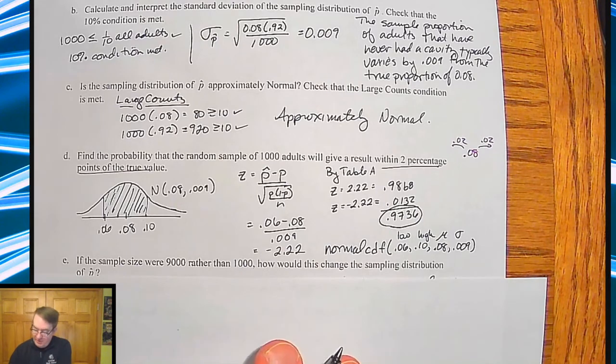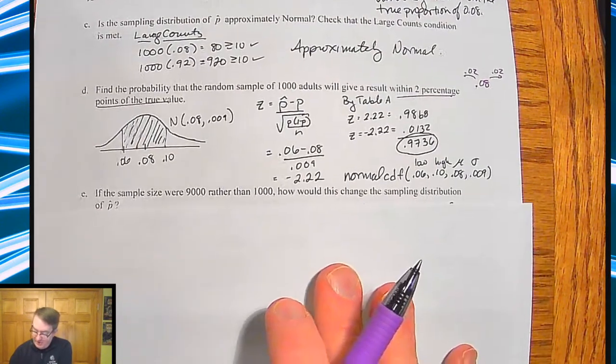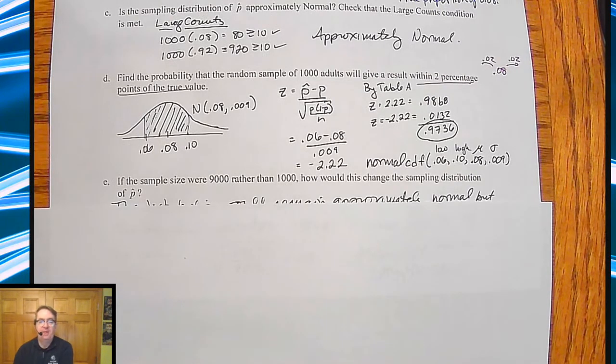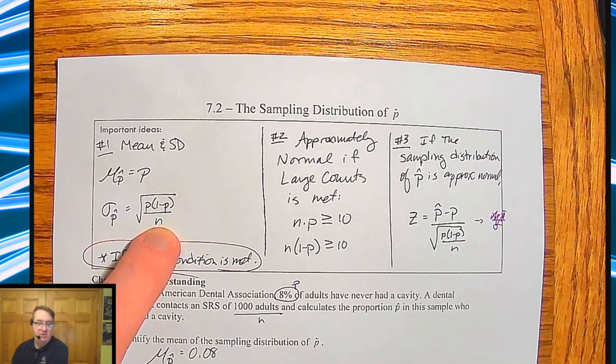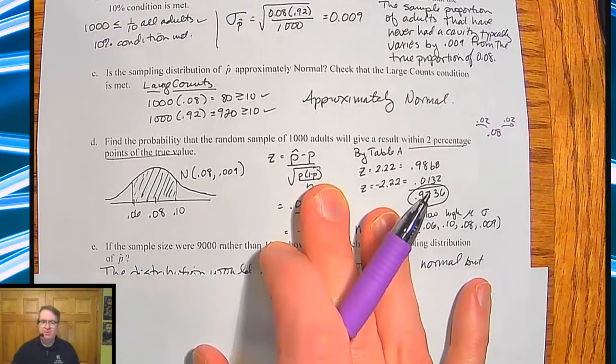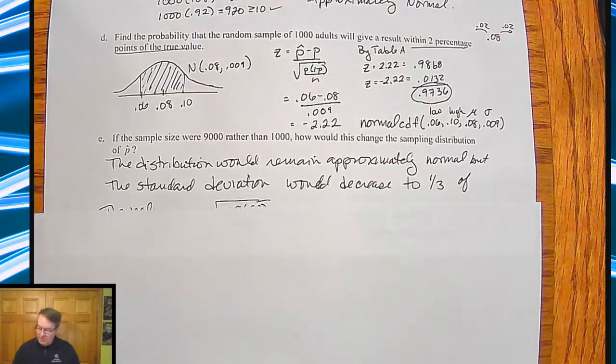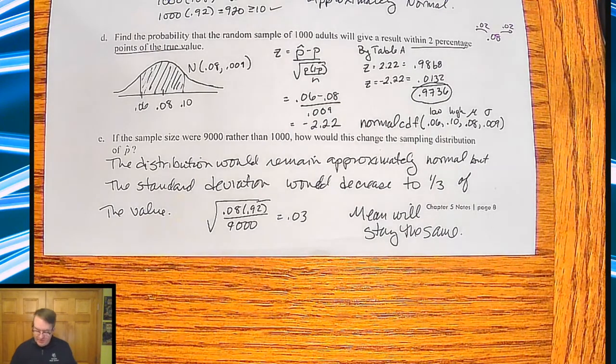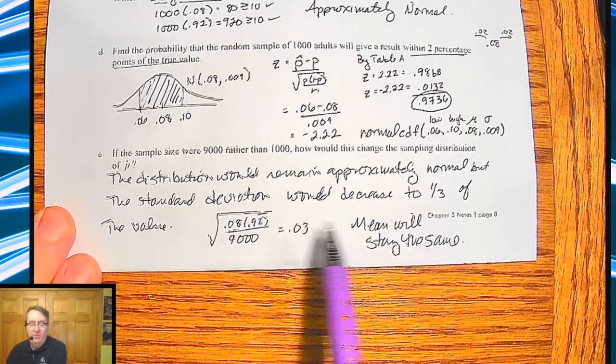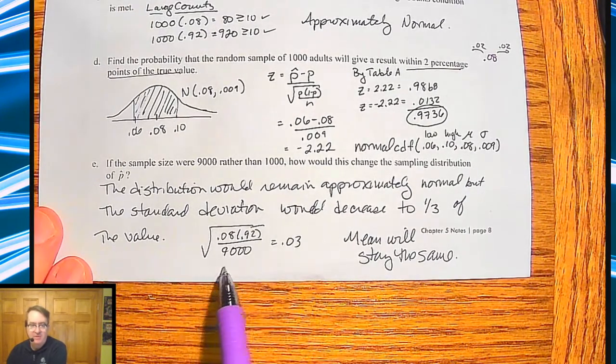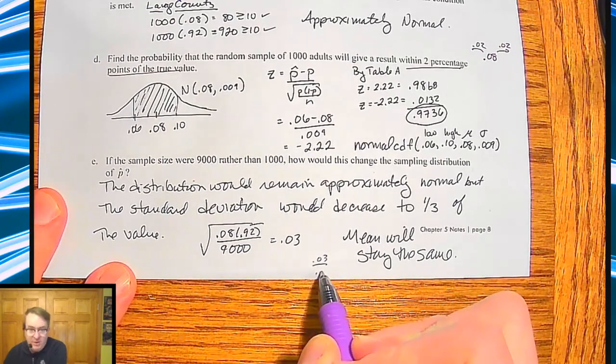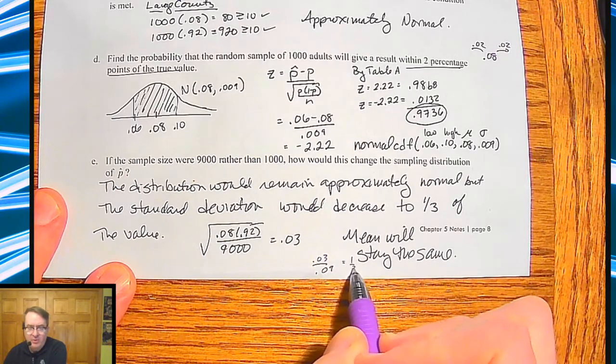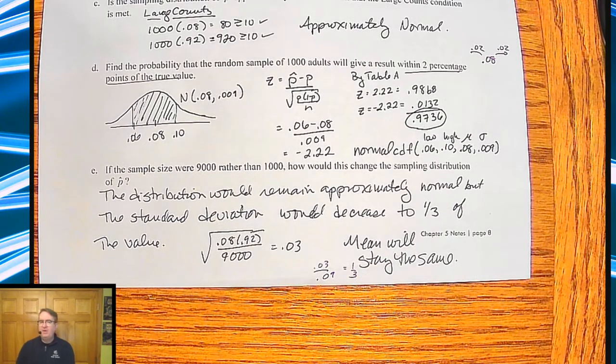So now the question here is, if the sample size were 9,000 rather than 1,000, how would this change the sampling distribution of p hat? Now, the mean isn't going to change. Why? Because the mean doesn't have anything to do with n. The mean is just the mean. However, the standard deviation is going to change. And you can look at this one of two different ways. So the distribution would remain approximately normal with the standard deviation being decreased by one-third of the value. And you can do it. So one way you can do it is you can just calculate out the new standard deviation. So I get 0.03 if this is 9,000. And so 0.03 over 0.09 equals one-third.